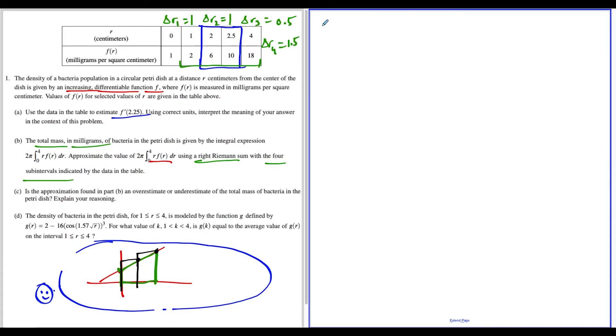For the last part, part D, we're given an actual function for the density of bacteria, and we're trying to find a value k between 1 and 4 where g of k equals the average value of g of r on the interval from 1 to 4. I like to translate this: I'm going to set g of k equal to the average value of g of r on the interval from 1 to 4, which is 1 over 4 minus 1 times the integral from 1 to 4 of g of r dr.